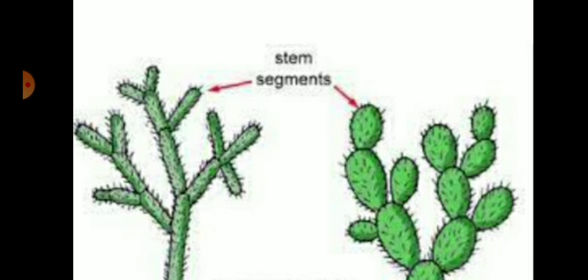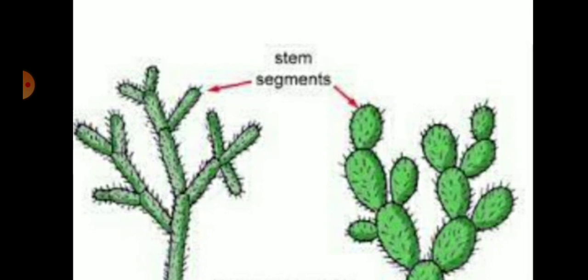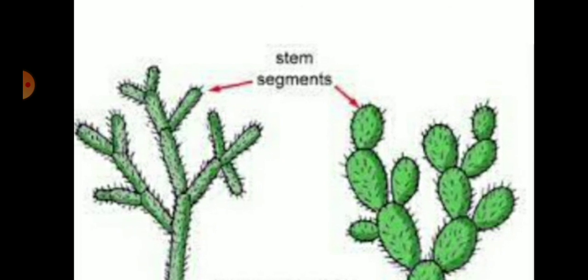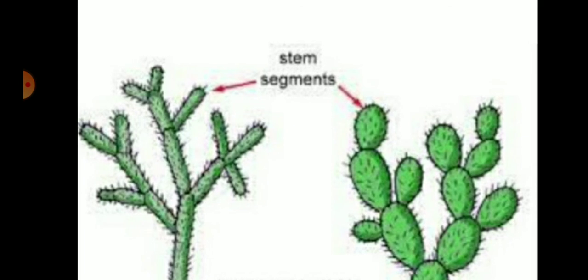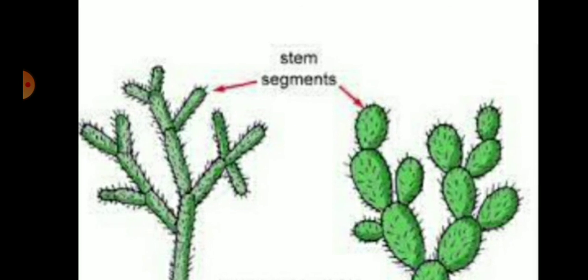The first plant, Opuntia, has leaves modified into spines to reduce surface area. The stem is also succulent and photosynthetic, retaining water and carrying out photosynthesis. The roots are spread near the soil surface to rapidly absorb water from the superficial strata of soil.